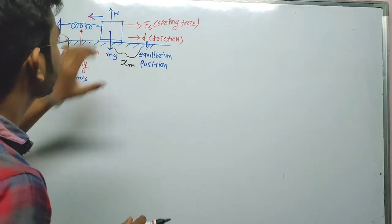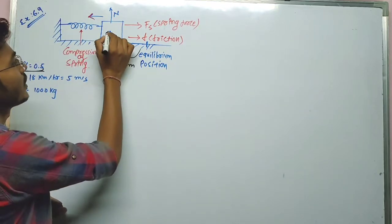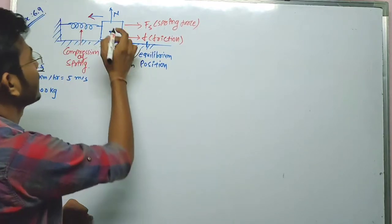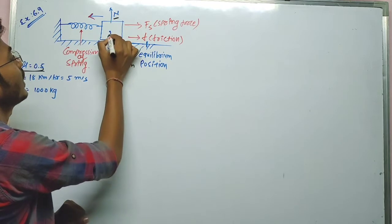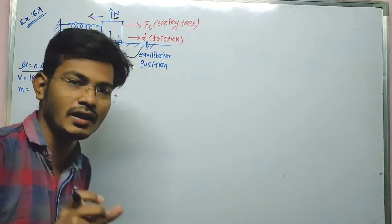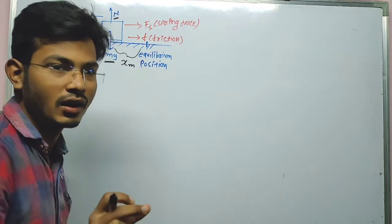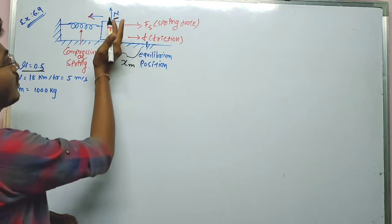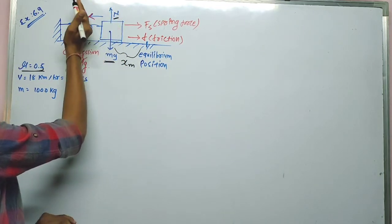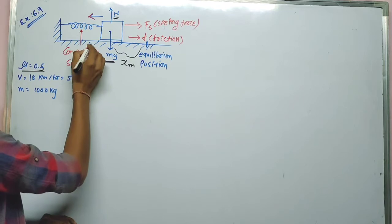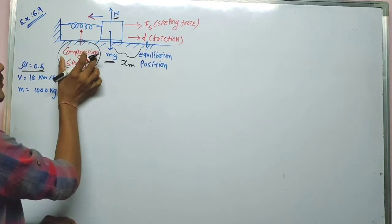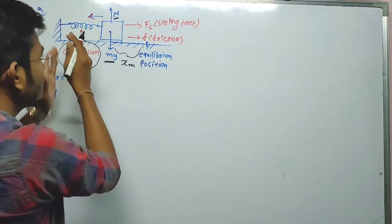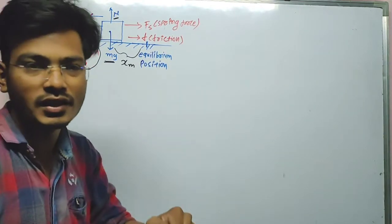For this problem we have the following forces. The car's weight acts in the downward direction, and exactly opposite is the normal reaction force N. We also need to identify the direction of the spring force and the direction of the car's motion, so we can determine the compression of the spring. The spring force acts in the opposite direction to the car's motion.